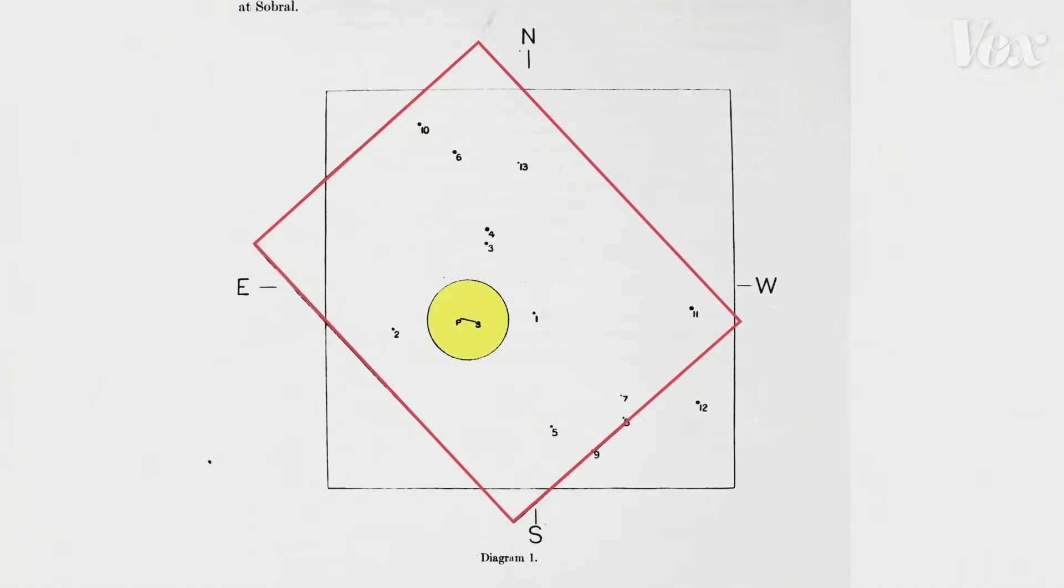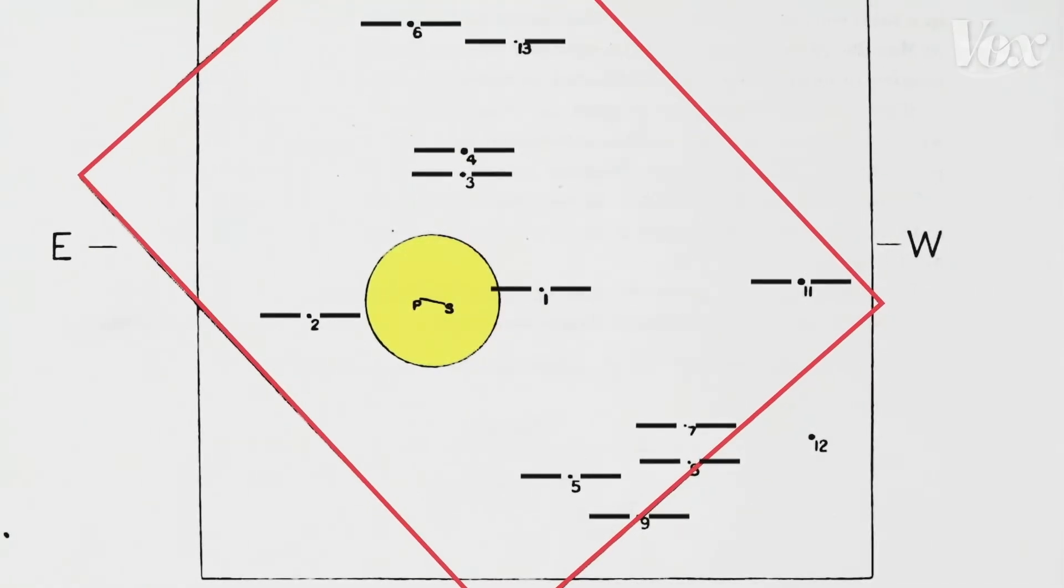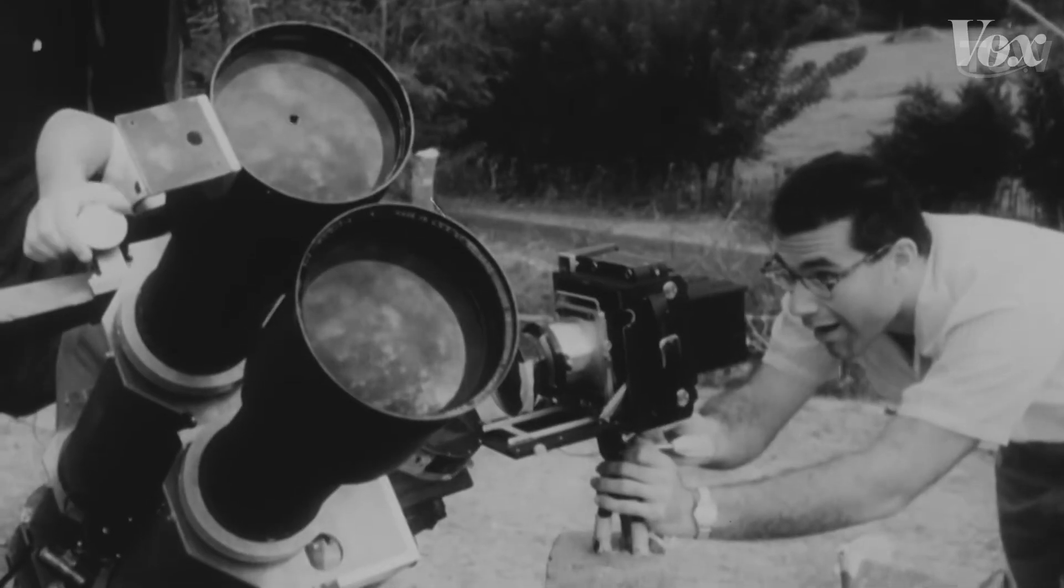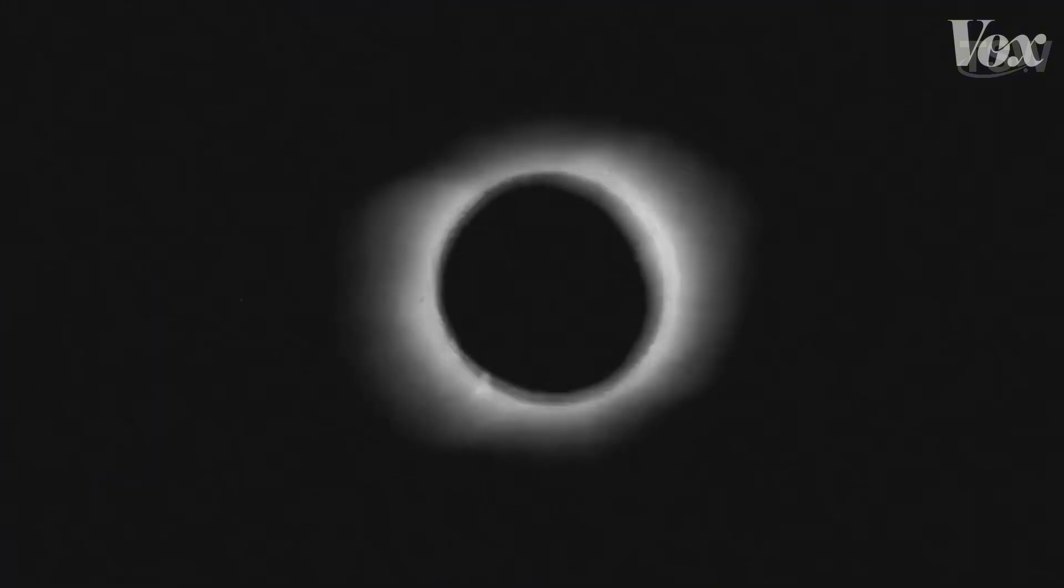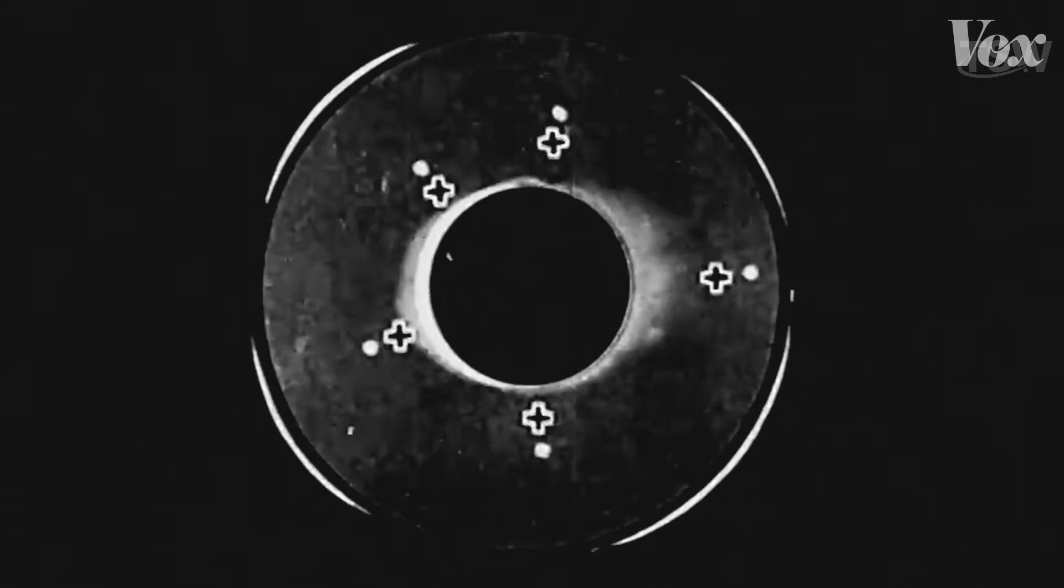That made the measurements much more accurate since more stars were visible near the solar disk. The day of the eclipse in Sobral became a real event. Shops closed, residents gathered in the streets, and the sky, cloudy at dawn, cleared up just in time during the minutes of totality. This allowed the astronomers to capture 27 photographs showing the stars around the eclipsed Sun.